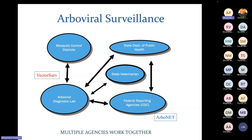Our arbovirus surveillance is not done alone. All mosquito control districts that conduct surveillance in Louisiana send their information to the same state lab, which disseminates that information to state and federal agencies. Those agencies also share their results back with us. It's multiple agencies working together — sharing information on human diseases, horse diseases, birds, and mosquitoes — to provide the best service to each parish.